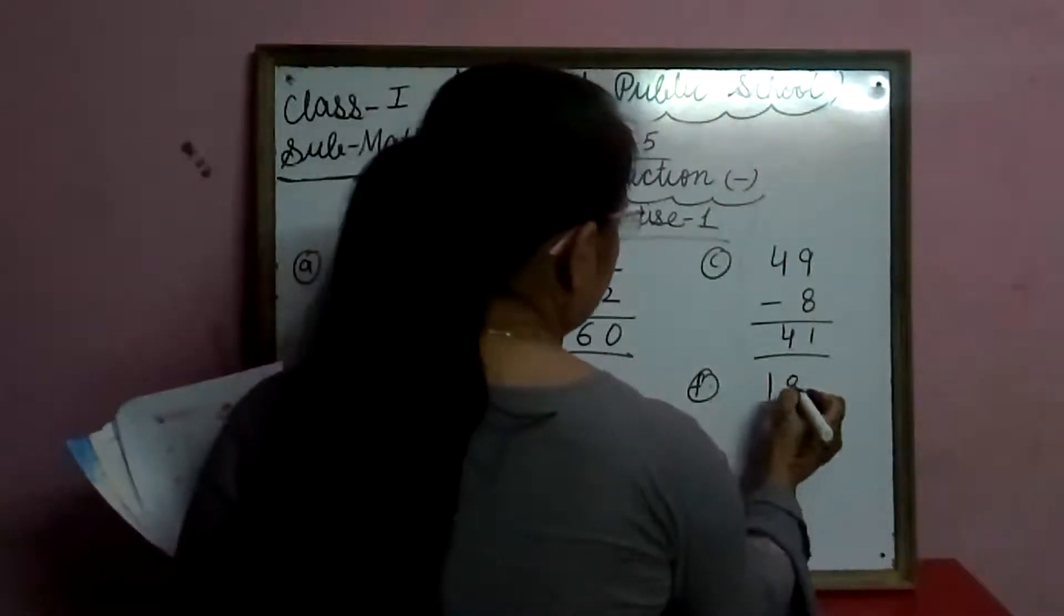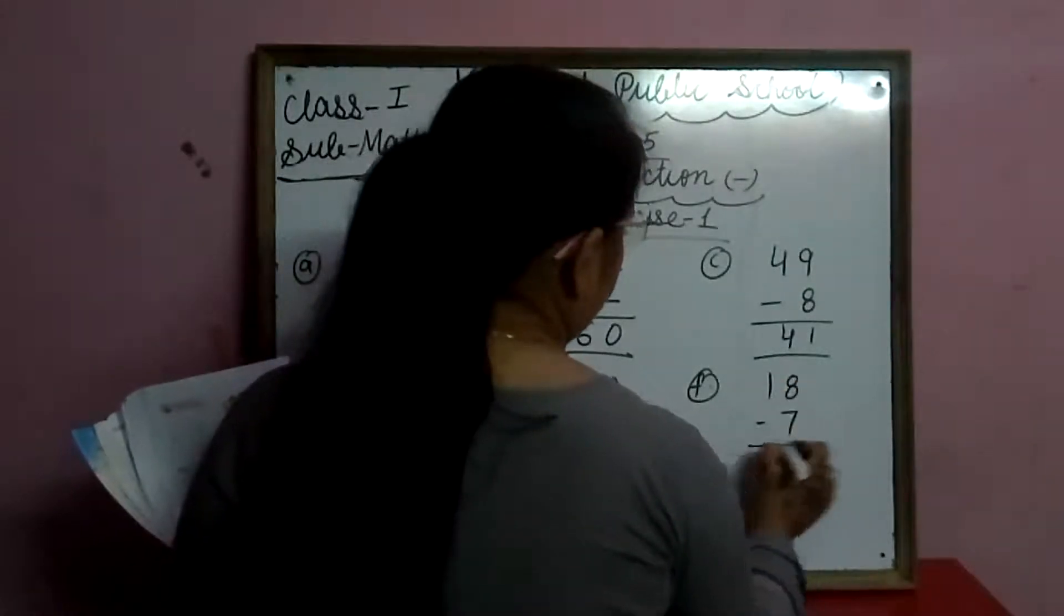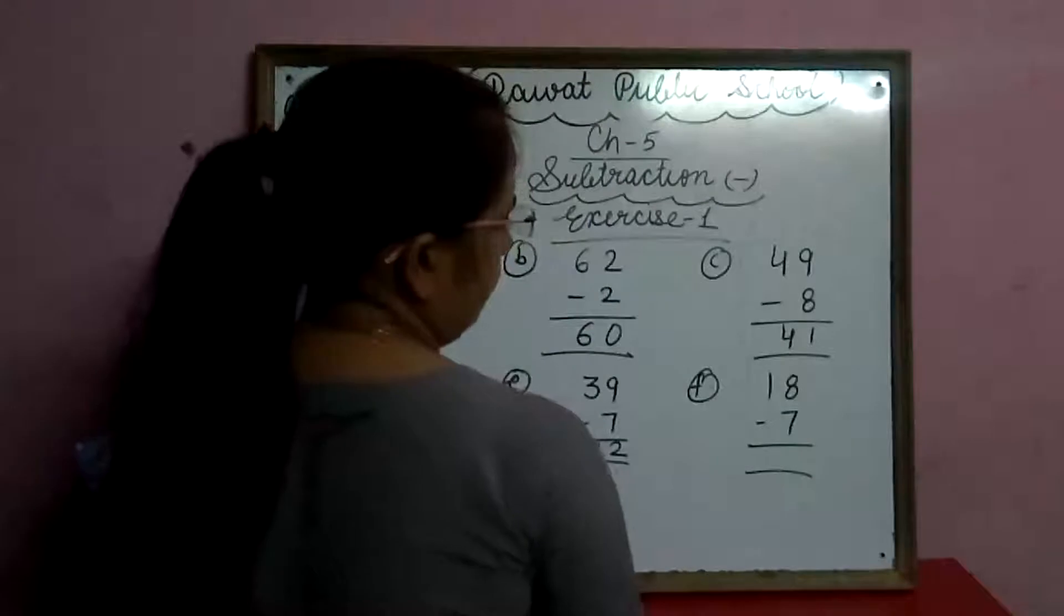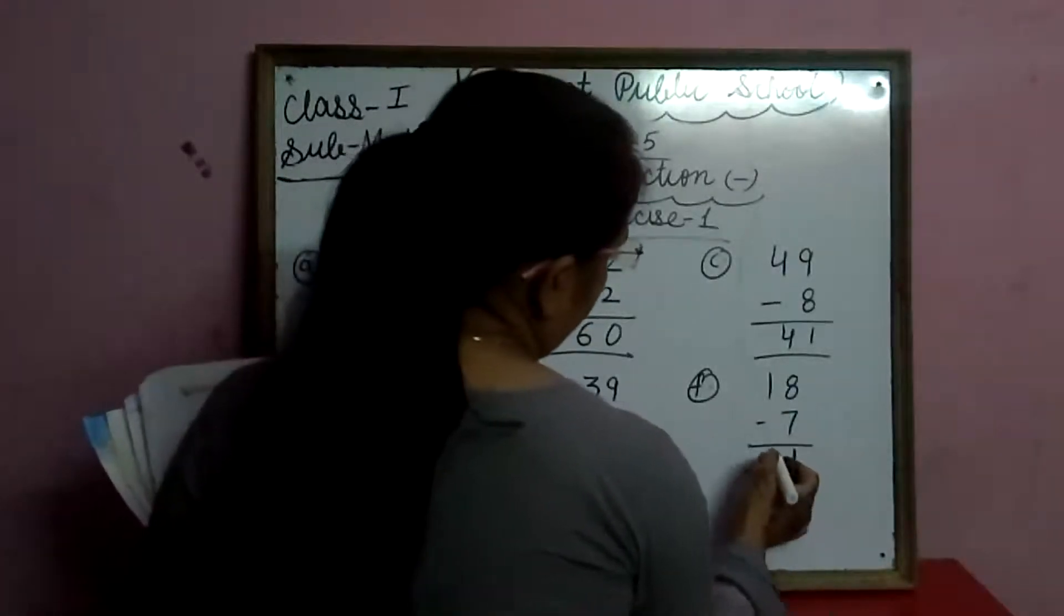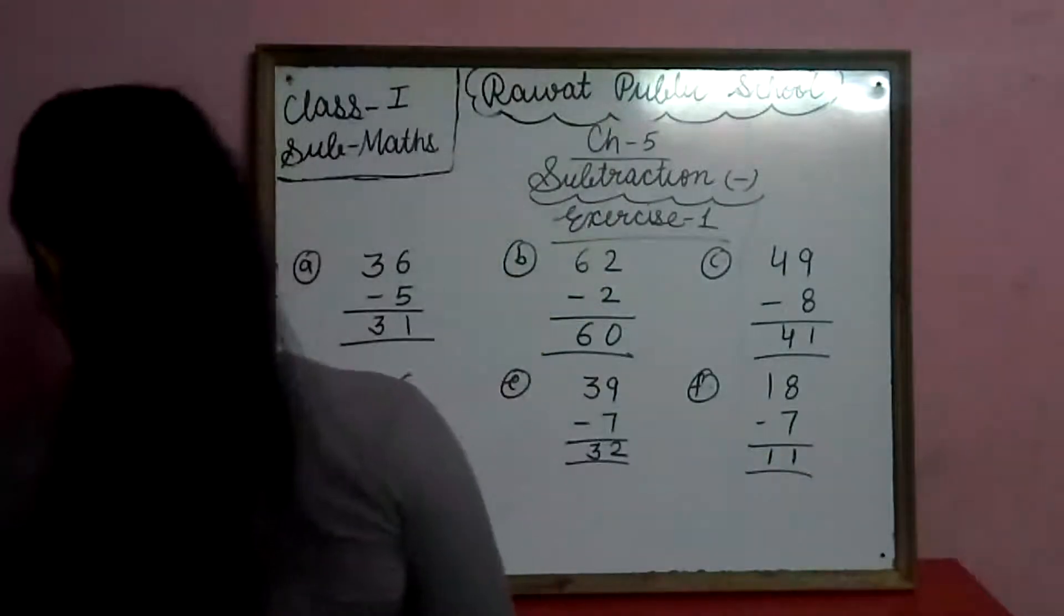F. 18 minus 7. 8 me se 7 jayega toh 1 bachega. 1 ke andar koi digit nahi hai, toh hum 1 hi likhenge.